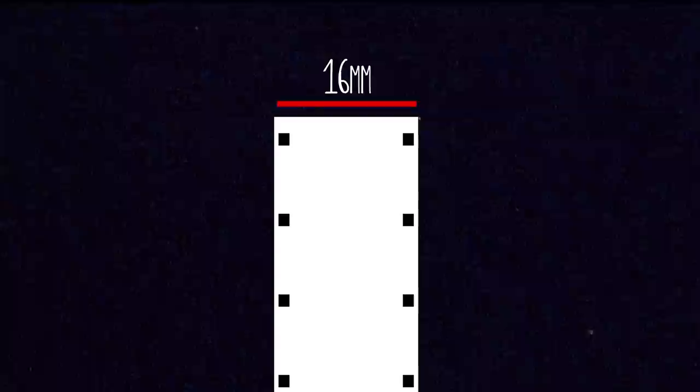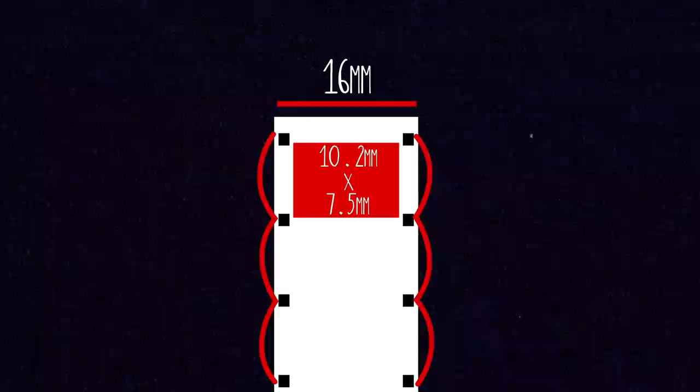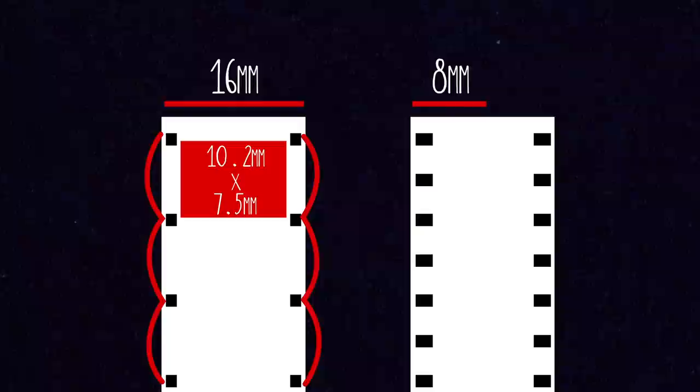16mm film is 16mm wide, which makes it almost about half the size of 35mm film. When the format was first introduced it looked like this, with perforations down both sides. A frame on the film would be exposed between these four perforations, and these frames were 10.2mm by 7.5mm in size. The film itself looks really similar to what would later be introduced as regular 8mm film, but the perforations are a little bit different and 8mm is meant to be shot through 8mm cameras and then cut in half.